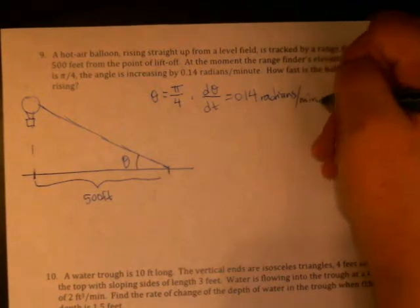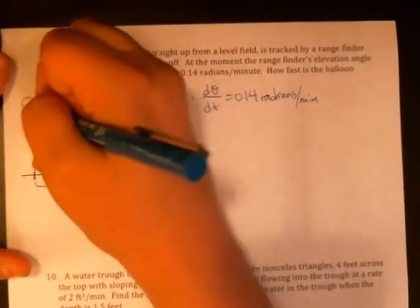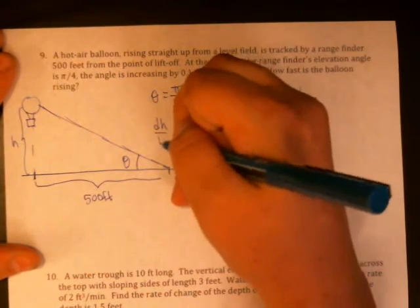Radians per minute. You don't technically have to write the radians, but I don't want to lose track of what my time units are. How fast is the balloon rising? So I'm going to call this h, and we're looking for dh/dt.